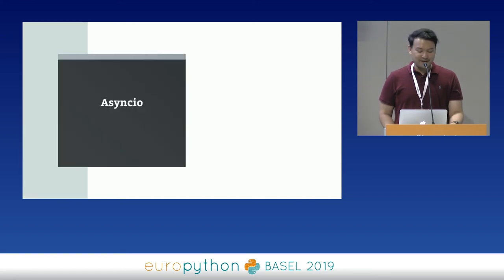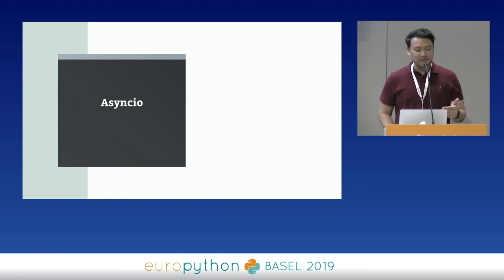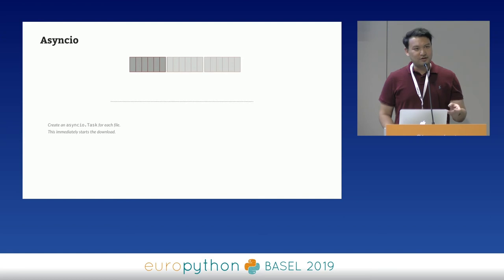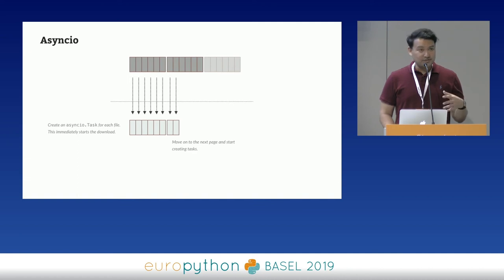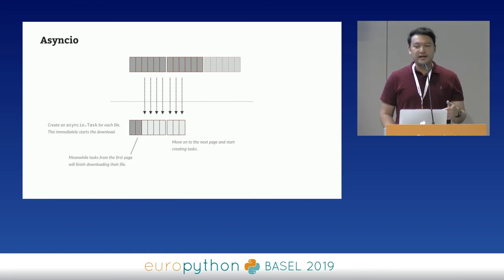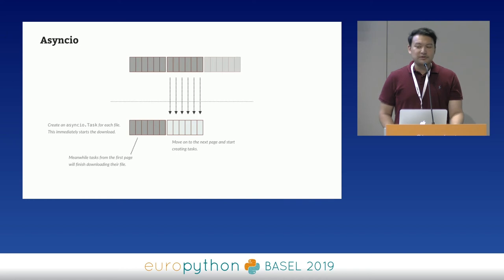Now let's move on to async I/O. What we're going to do is slightly different. We make our list call like before, but we start a new asyncio task for each file download. The lighter-colored tasks in the diagram indicate running but not done. We spawn all these tasks, move on to the next page, queue up more tasks — they're actually running now. As we create more tasks, some finish, and we just keep going. Tasks can finish in somewhat arbitrary order.